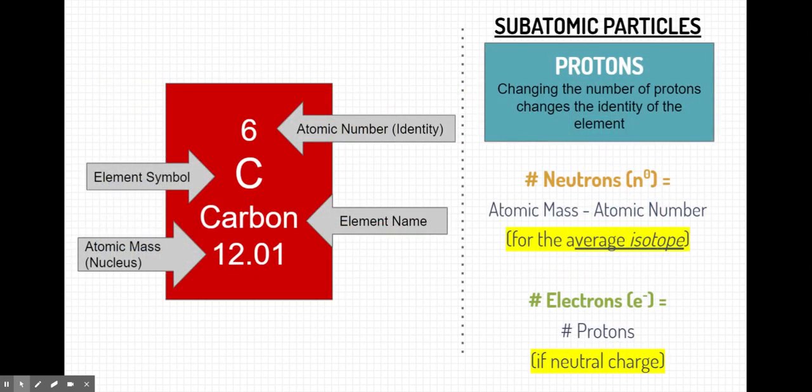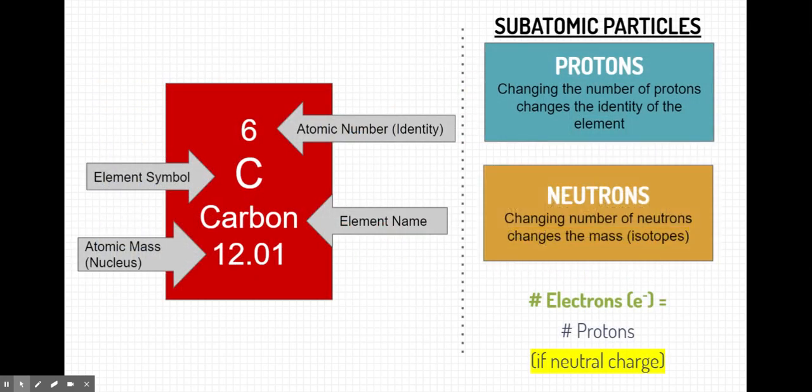So neutrons. If we change the number of neutrons, we change the mass of the element. And we call these different elements with different masses isotopes. Let's go down to electrons now. We know that typically electrons are equal to the number of protons, but that's only if the atom has a neutral charge.